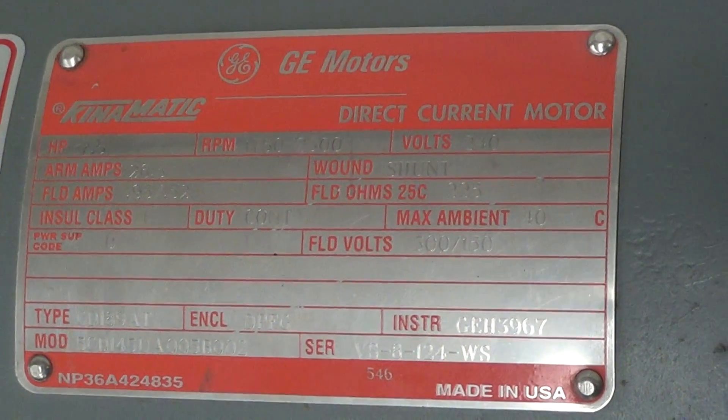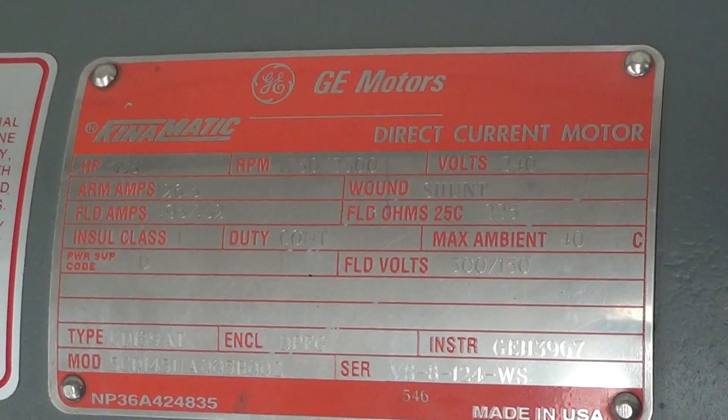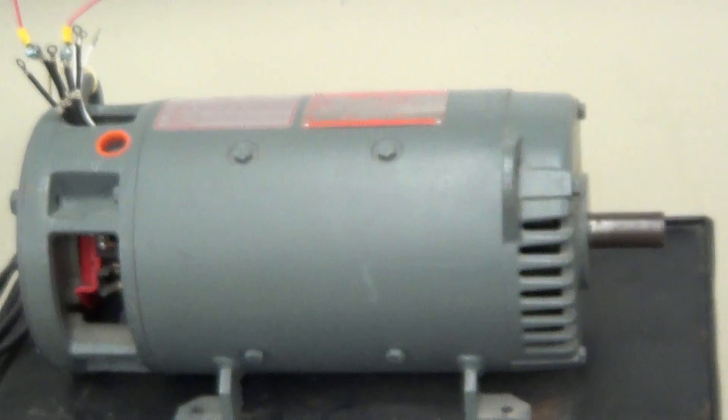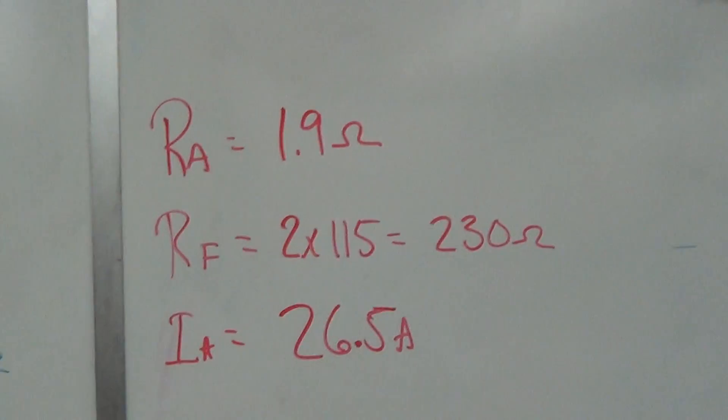We're going to talk about this particular motor here, 7.5 horsepower, 240 volt DC motor. And there's the motor.